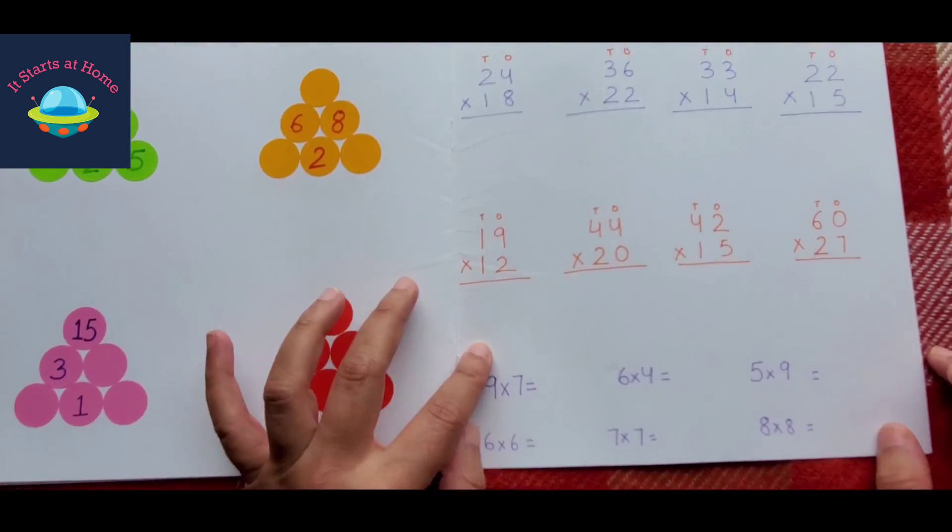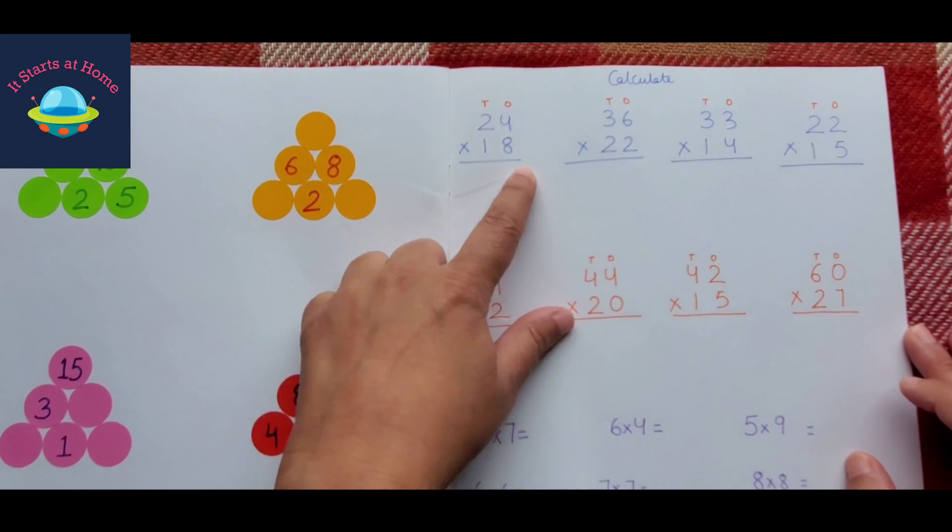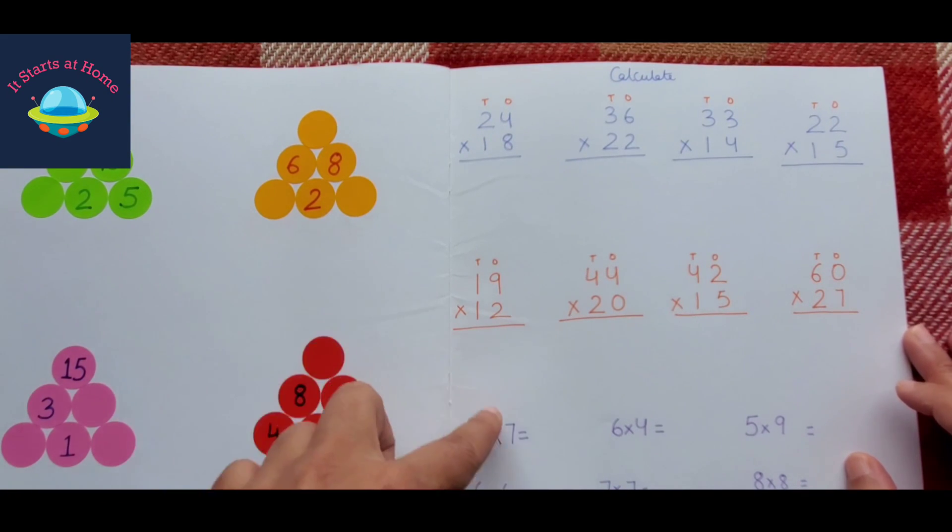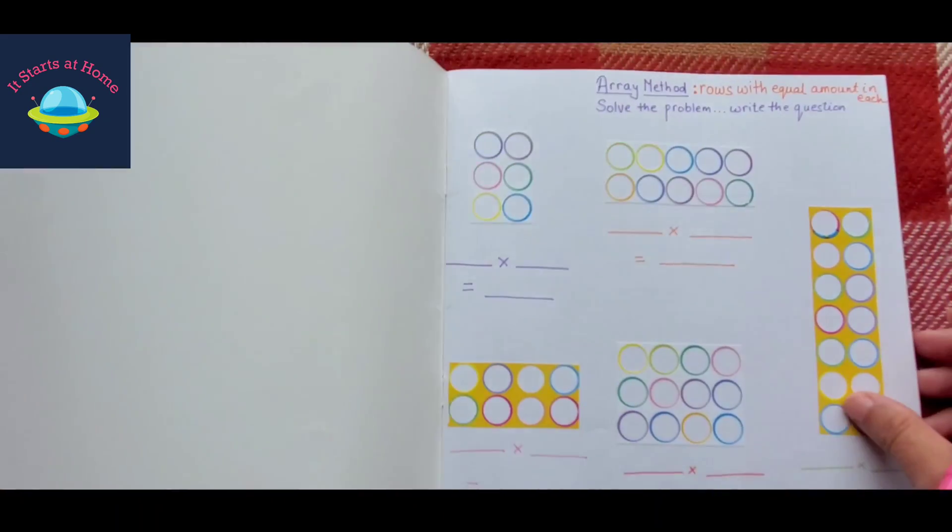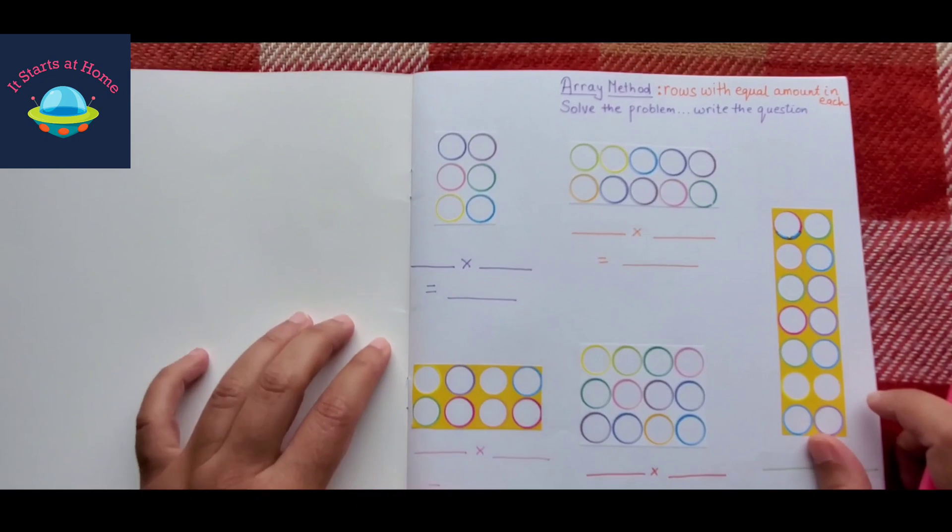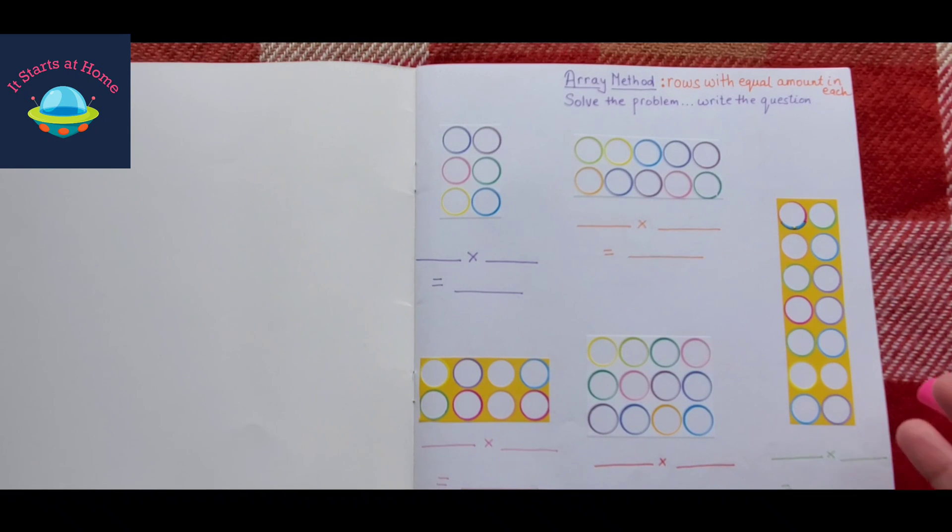Then I have some old-school calculation which is double digit because Vivan is already doing that, and I have a single digit one right here. Let me show it to you from the beginning. This is the array method which is rows with equal amount in each to solve the problem.